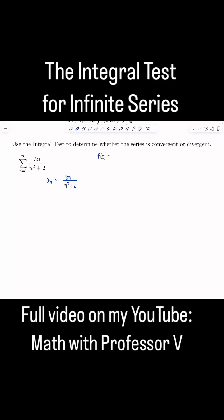Define a function of x and you just swap out the n's for x's. So 5x over x squared plus 2.